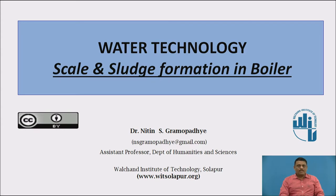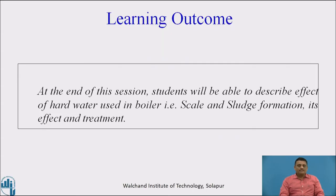This particular topic is related with what happens when we use hard water for creating steam in industry. The learning outcome for today's session: at the end of this session, students will be able to describe the effect of hard water used in boiler, i.e., scale and sludge formation, its effects and treatment.